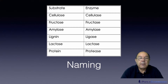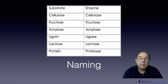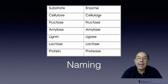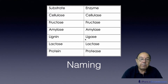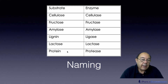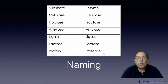The way we generally name enzymes now is to look at the material the enzyme acts on and then add '-ase' to the end. An enzyme that acts on cellulose is a cellulase. Fructose is a type of sugar, so an enzyme acting on fructose is a fructase. Amylose is a type of starch, so an enzyme acting on amylose is amylase. Enzymes that react on lignin are therefore lignases. Lactose is found in milk, so an enzyme acting on lactose is a lactase. And an enzyme that acts on protein — like tenderising meat — is a protease.